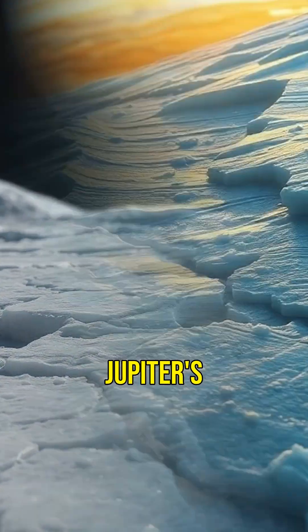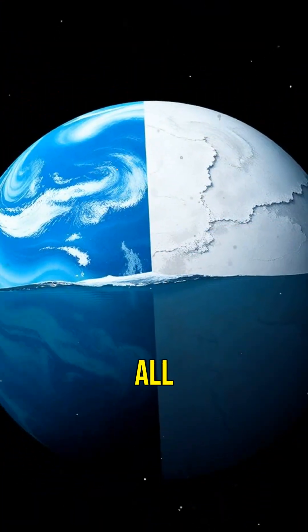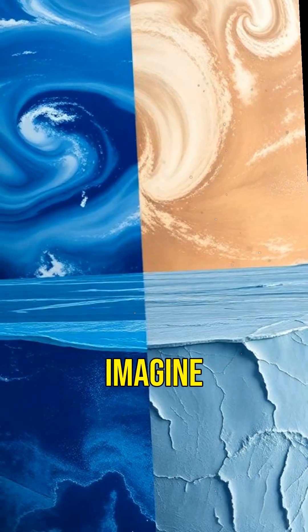Europa, one of Jupiter's moons, has an icy shell that scientists believe hides a vast subsurface ocean. This ocean could hold more water than all of Earth's oceans combined. Imagine that.